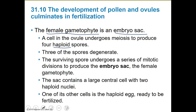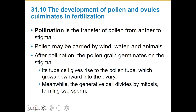The female gametophyte is the embryo sac. The cell in the ovule undergoes meiosis to produce haploid spores. Three of the spores degenerate. The surviving spore undergoes a series of mitotic divisions to become the embryo sac — the female gametophyte. The sac contains a large central cell with two haploid nuclei. One of its other cells is a haploid egg ready to be fertilized. This is a good place to pause and regroup before continuing.